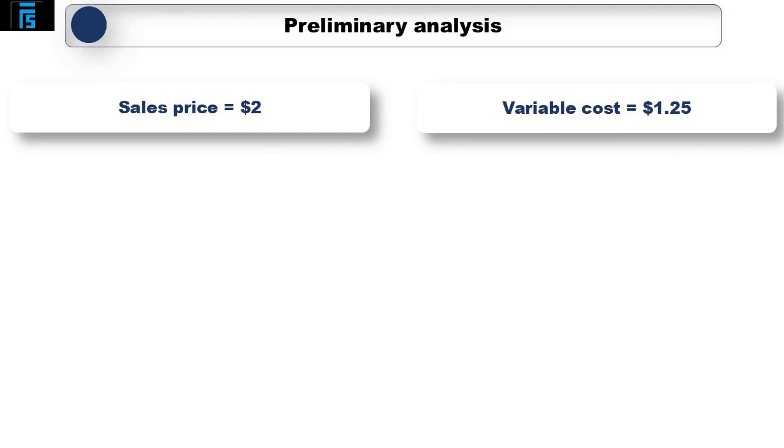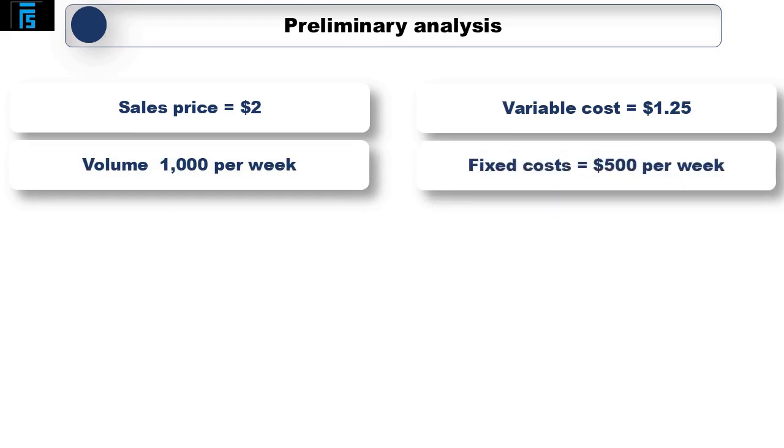Sales price $2 a yoghurt. Variable cost $1.25 a yoghurt. Volume 1,000 per week and fixed costs $500 per week.